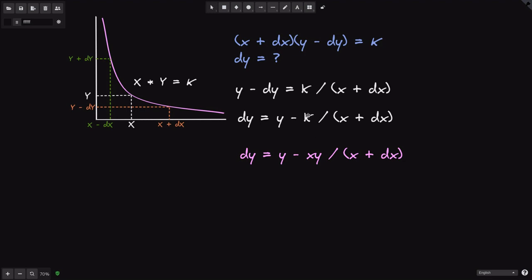First, we'll replace K by X times Y. And we can do this because X times Y is equal to K. And if you do more algebra, some of the terms cancel out, and we're left with Y times DX divided by X plus DX.